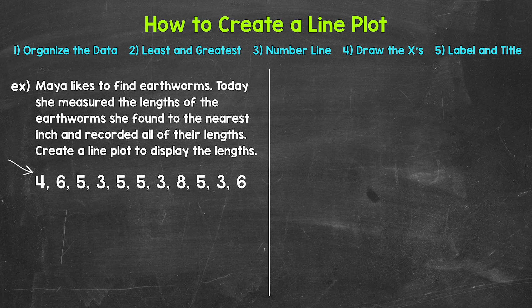When creating a line plot, the first thing we may need to do is organize our data — the numbers we are working with. You may be working with data that is already organized, maybe in a table, in order from least to greatest. If your data is already organized, you can skip this step. For this example, though, the data isn't organized — we just have a list of numbers in no particular order. So our first step here, we need to organize the data. Let's put it in order from least to greatest.